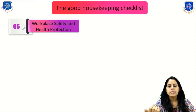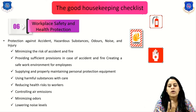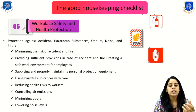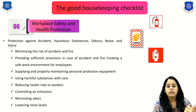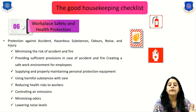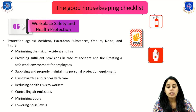The last checklist item is workplace safety and health protection, covering protection against accidents, hazardous substances, noise, injury, and other safety concerns. This includes minimizing the risk of accident and fire, providing sufficient provisions in case of accident and fire, creating a safe work environment for employees, supplying and properly maintaining personal protective equipment (PPE) such as hard hats, safety goggles, and so on, using harmful substances with care, reducing health risks for workers, controlling air emissions, minimizing odors, and lowering noise levels.